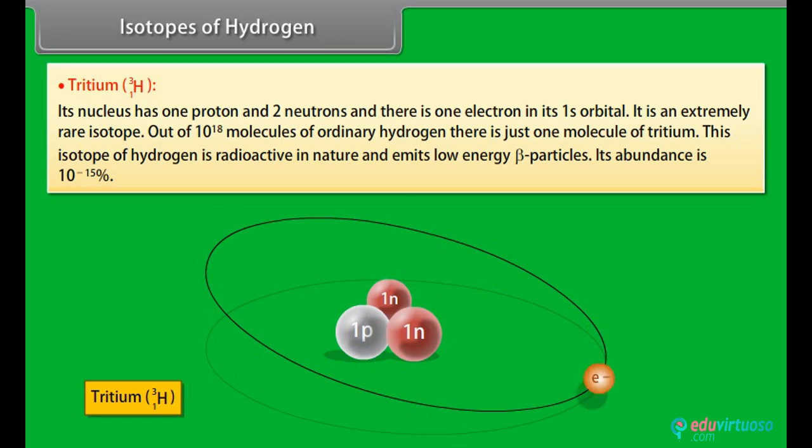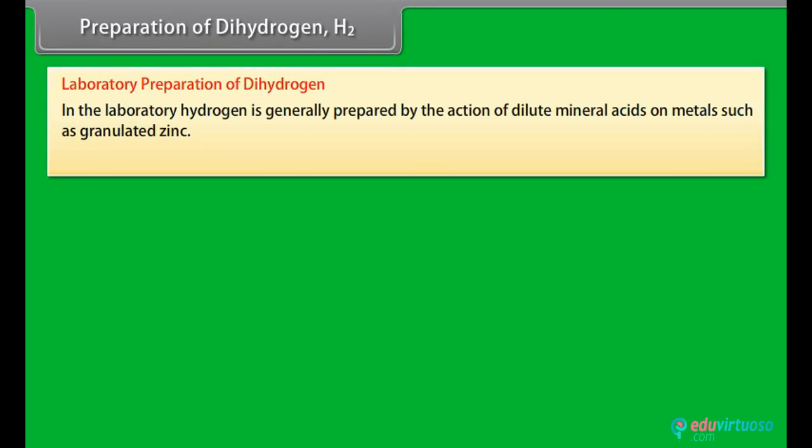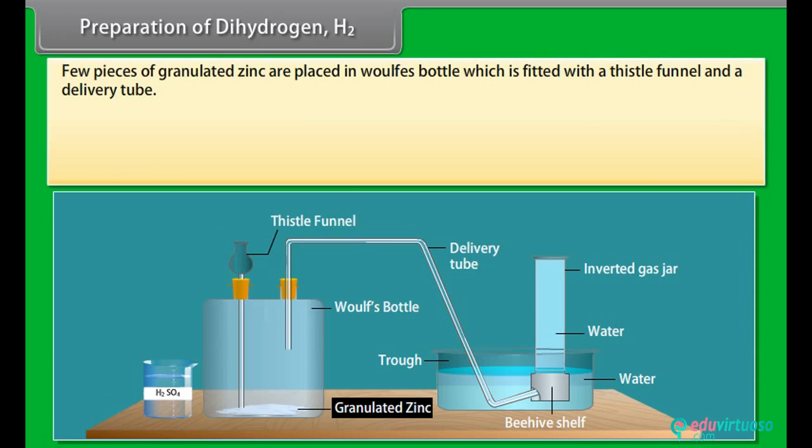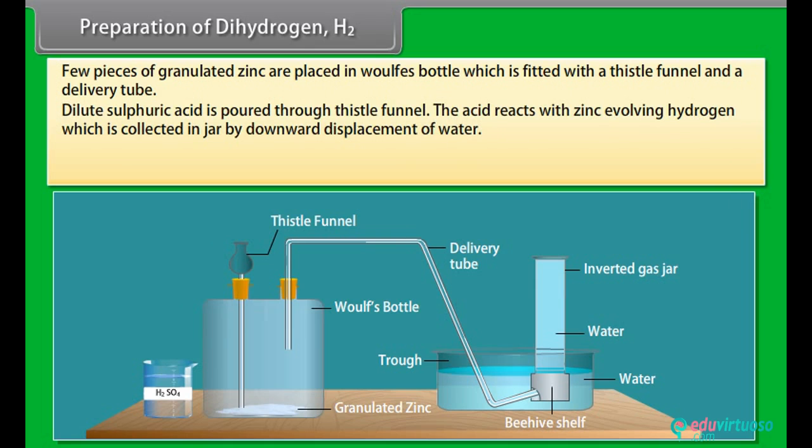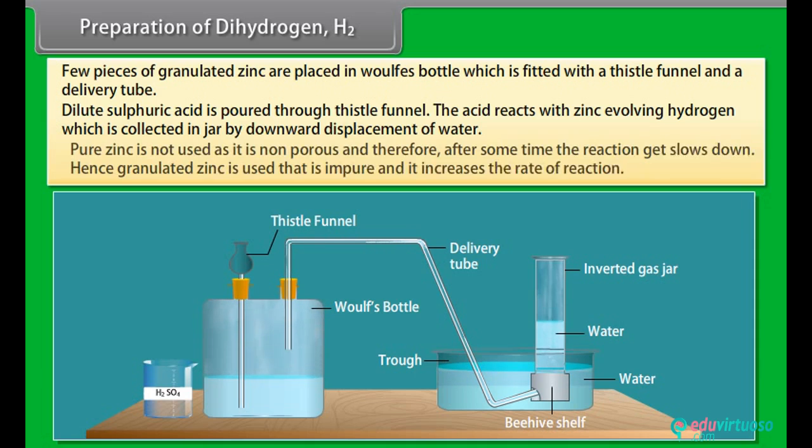Preparation of Dihydrogen H2. Laboratory Preparation of Dihydrogen. In the laboratory, hydrogen is generally prepared by the action of dilute mineral acids on metals such as granulated zinc. Few pieces of granulated zinc are placed in Woulff's bottle which is fitted with a thistle funnel and a delivery tube. Dilute sulphuric acid is poured through thistle funnel. The acid reacts with zinc, evolving hydrogen, which is collected in jar by downward displacement of water. Pure zinc is not used as it is non-porous and therefore, after some time, the reaction slows down. Hence, granulated zinc is used that is impure and it increases the rate of reaction.